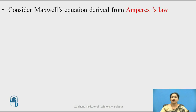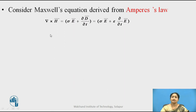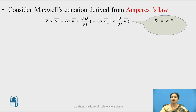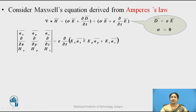Now let us consider Maxwell's equation derived from Ampere's law: del cross H-bar is equal to sigma E-bar plus ∂D/∂t. We substitute D-bar equal to epsilon E-bar, and since sigma is equal to zero for free space, the equation reduces. After expansion of del cross H-bar, we obtain the terms in x, y, and z coordinates.